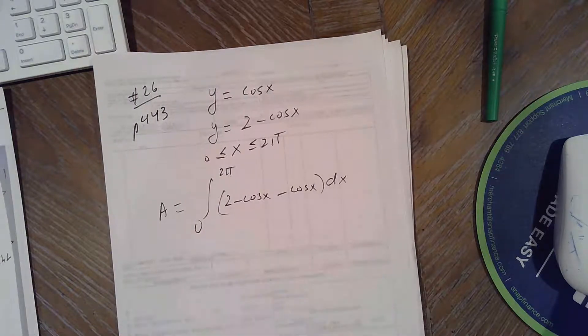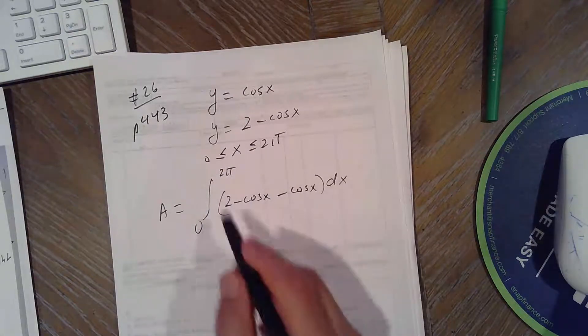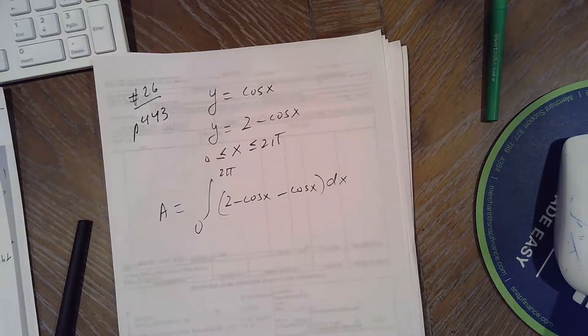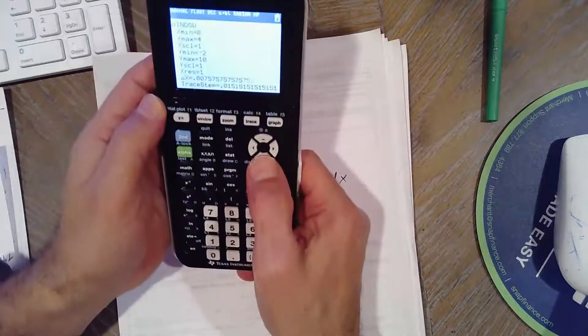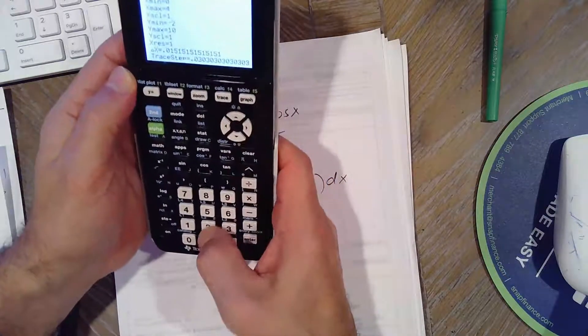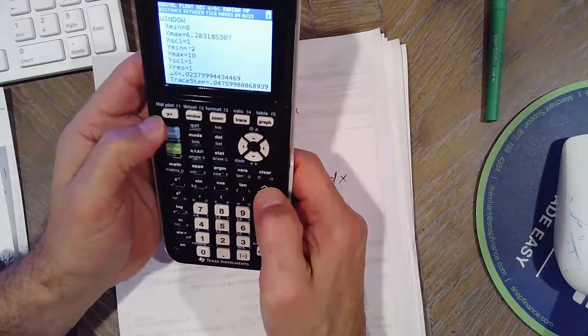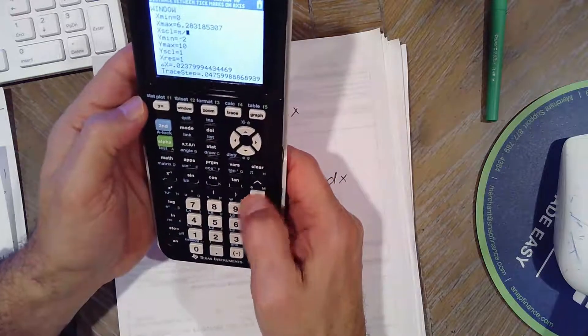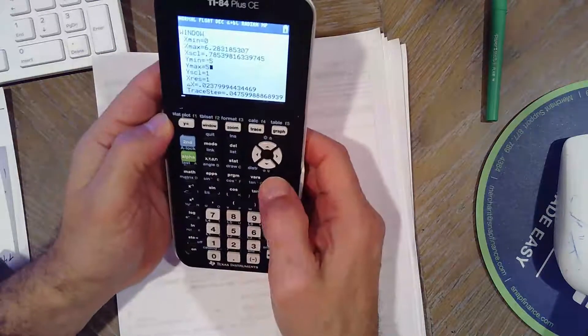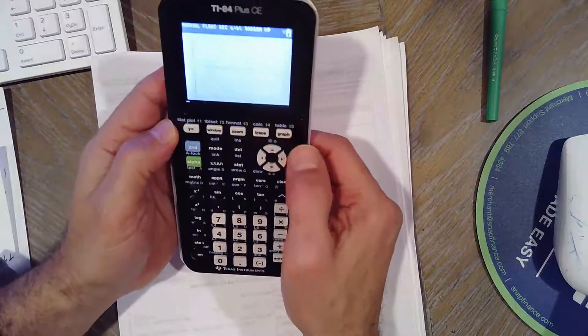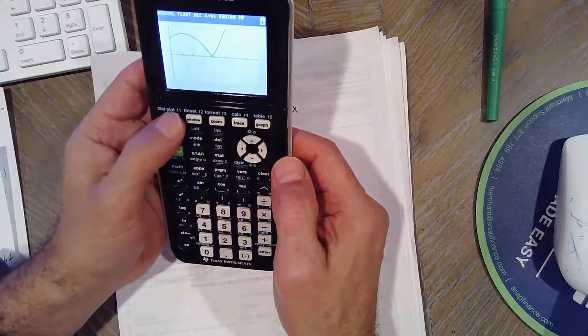And 0 to 2π, so here's the graph. So let's do the window, 0 to 2π, and let's do π over 2 units, or π over 4, and then the Y is negative 5 to 5.